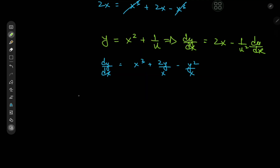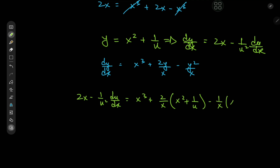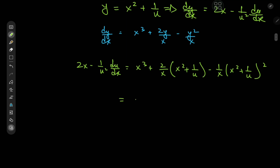Substituting into the differential equation, the left-hand side is 2x − (1/u²)(du/dx). On the right we have x³ + (2/x)(x² + 1/u) − (1/x)(x² + 1/u)². Expanding, the right-hand side becomes x³ + 2x + 2/(xu) − (1/x)[x⁴ + 1/u² + 2x²/u].